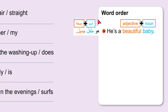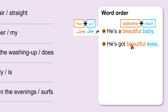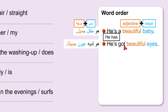In Arabic, nouns come first, then the adjective — it's not the same in English. Or we could say: he's got beautiful eyes. He's got is short for he has got beautiful eyes — not he's got eyes beautiful. No. Adjective, then noun.